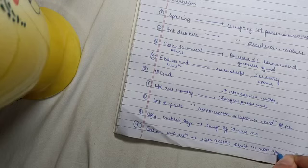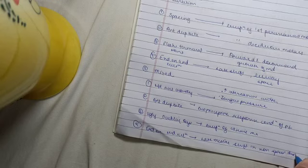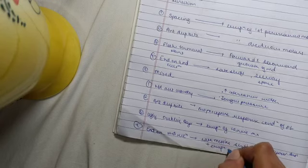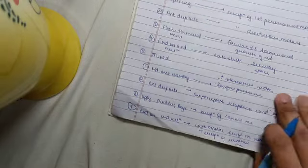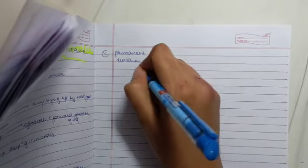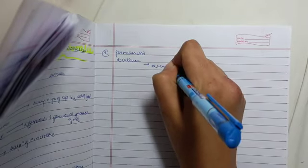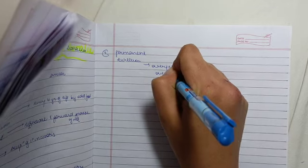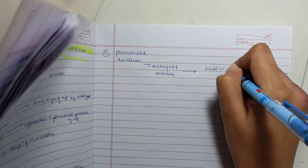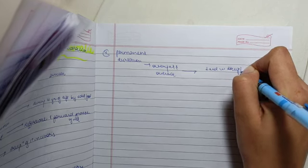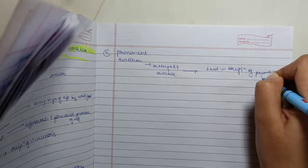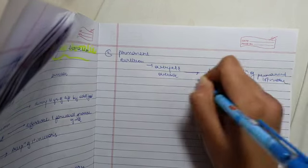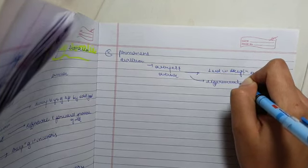In permanent dentition, there is an overjet and overbite which is decreased with eruption of permanent first molar, also by the differential growth.